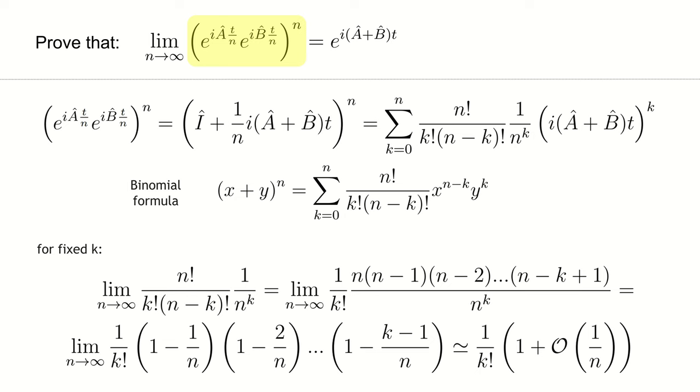It's easy to see that with n tending to infinity, each bracket tends to 1. Therefore, the whole expression tends to 1 divided by k factorial. Also, let us not forget to leave the asymptotic dependence on n.